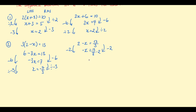We need a common denominator, so 13 on 3 take 2 becomes 13 on 3 take 6 on 3. With negative x on the left, negative x equals 7 on 3. Then divide by negative 1 to get x equal to negative 7 on 3.